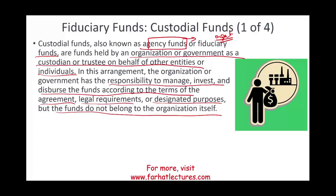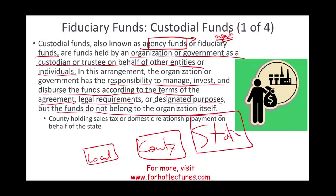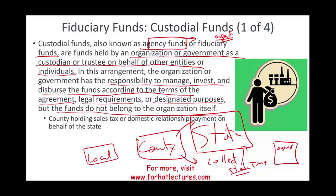For example, in the U.S. we have local government, county government, and state government — local being the smallest, county a bit larger, then state. For example, a county could collect state taxes. But state taxes belong to the state — why is the county collecting them? The county is collecting them for the sole purpose of transferring this money to the state, just helping the state out. So when they collect this money they put it in an agency fund, because it's not their money.